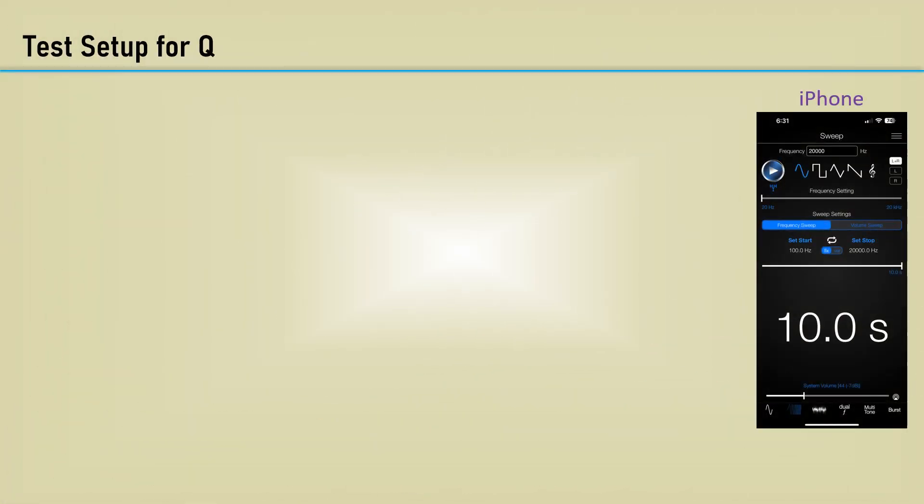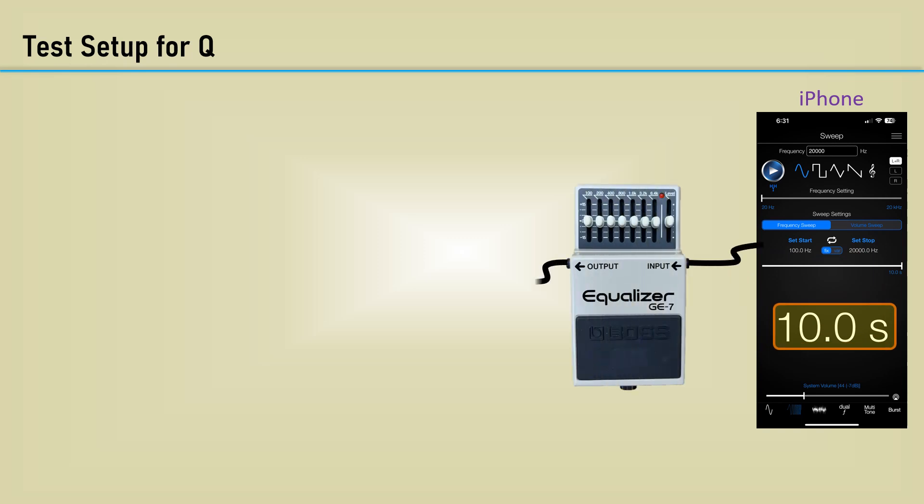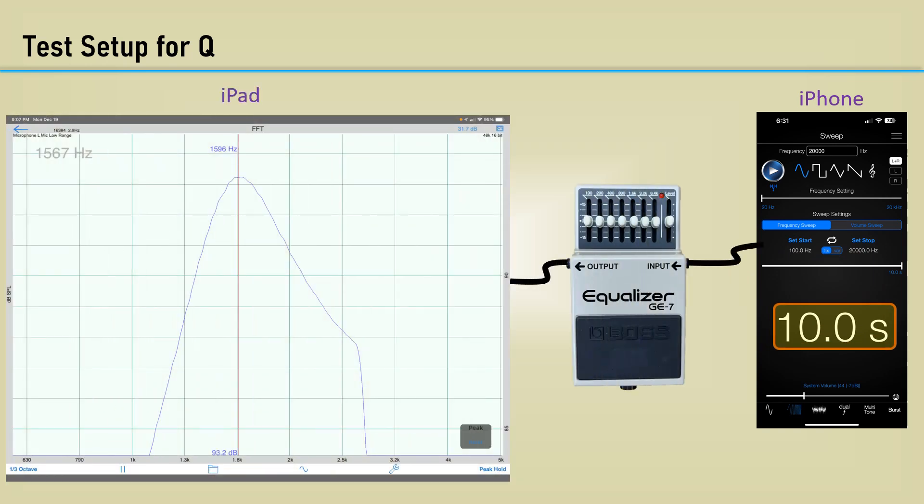Here's my test setup. I'm using an audio sweep generator app on an iPhone with a sweep time of 10 seconds. The signal is routed through the GE7, and its output is connected to an iPad with a fast Fourier transform app. The FFT app has a peak hold feature to record the spectrum across the sweep. These apps are not very precise and do not have the greatest flatness across the band, but they will suffice for making Q measurements.